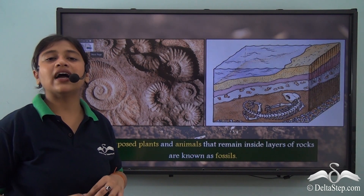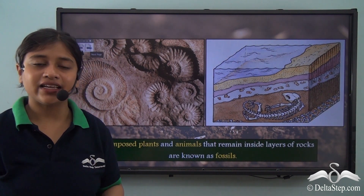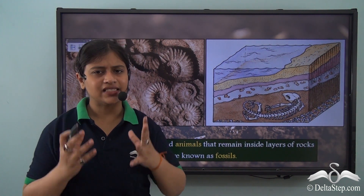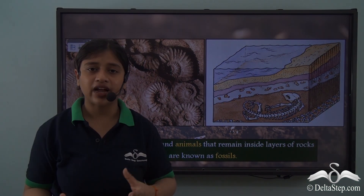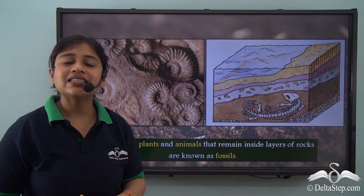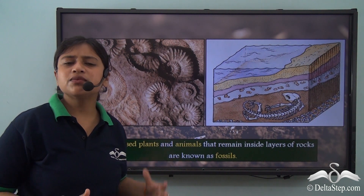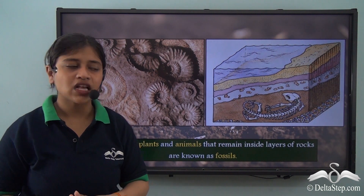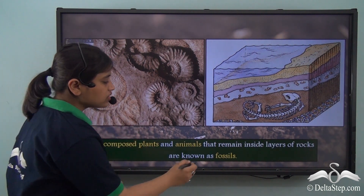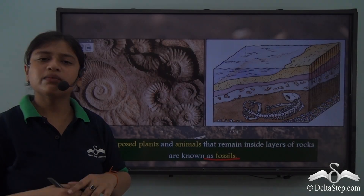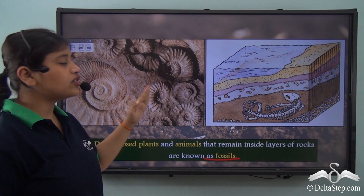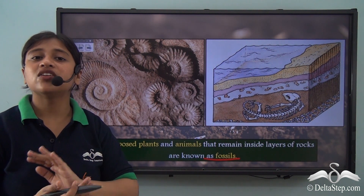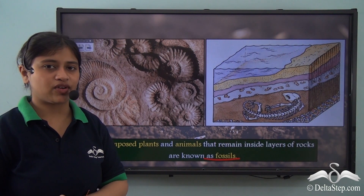Sedimentary rocks contain animals and plants that are dead and have decomposed. The remains of these decomposed plants and animals found in the inside layers of sedimentary rocks are called fossils. You must have seen these beautiful fossils in pictures, in movies and also in your school textbook.